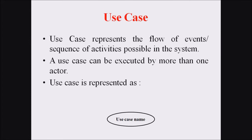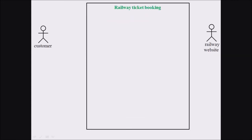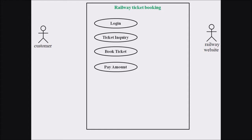Use cases are represented with an elliptical shape with a use case name. They represent the flow of events or sequence of activities possible in the system, and are executed by more than one actor. In our railway ticket booking system, the use cases include: login, ticket enquiry, booking the ticket, pay amount, and cancel ticket.